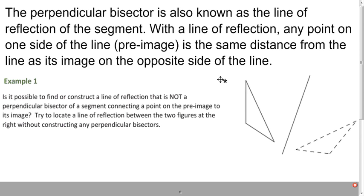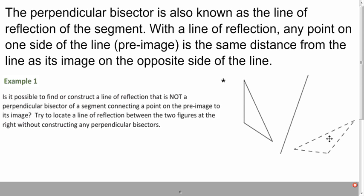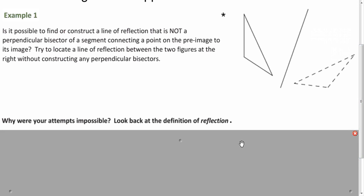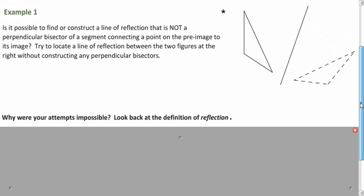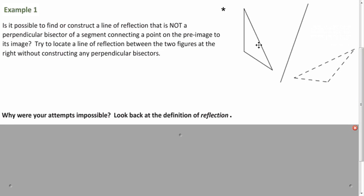So here is a line of reflection I found. And it turns out that no matter how you did it, it had to be a perpendicular bisector. Why is that? So that was impossible what we were asked to do.